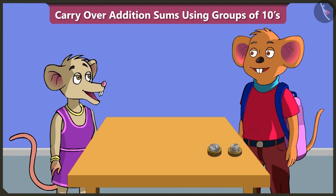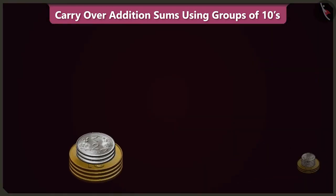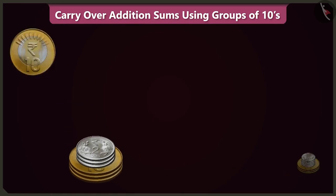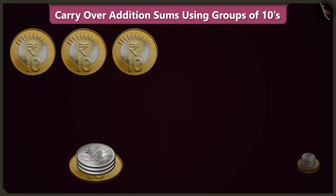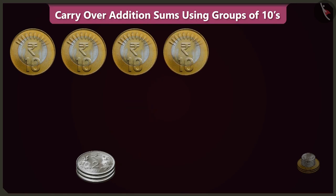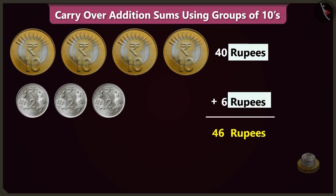Yes, sure Choo Choo! In this pile of coins there are one, two, three, and four coins of ten rupees, which is forty rupees, and three coins of two rupees, that is six rupees. So forty and six — there are forty-six rupees in this pile.